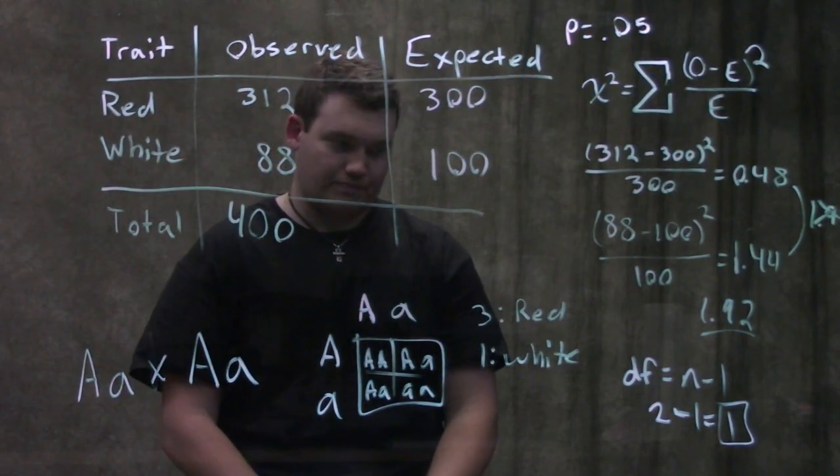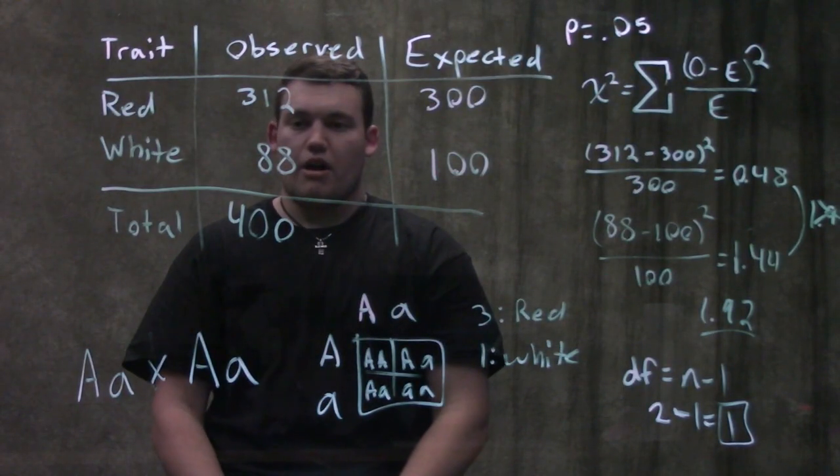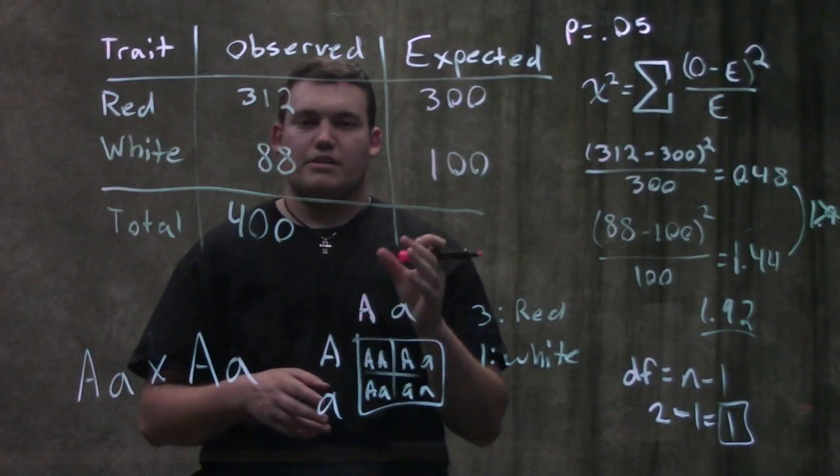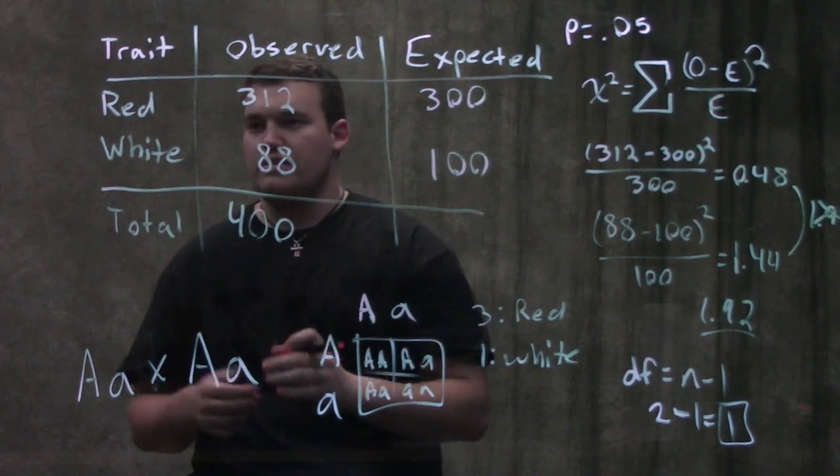And then you go down there and it's gonna give you a chi-squared value. And so what we look at is our chi-squared values, it's gonna give you a set of numbers. You say, okay, where is my number? Is it between this and this, or this and this?